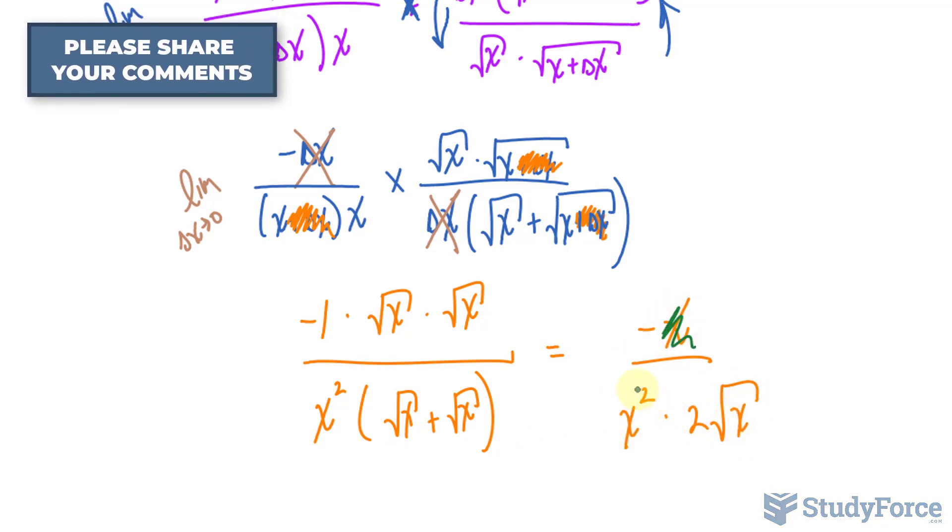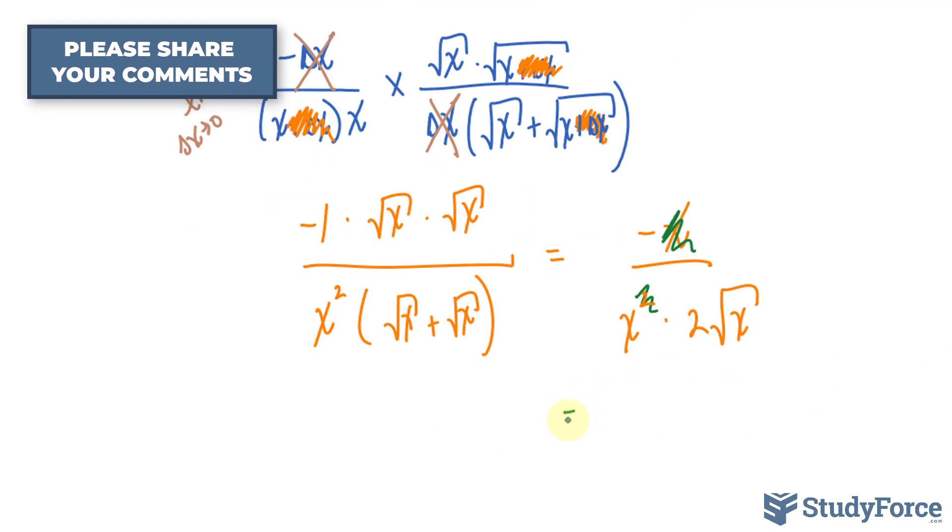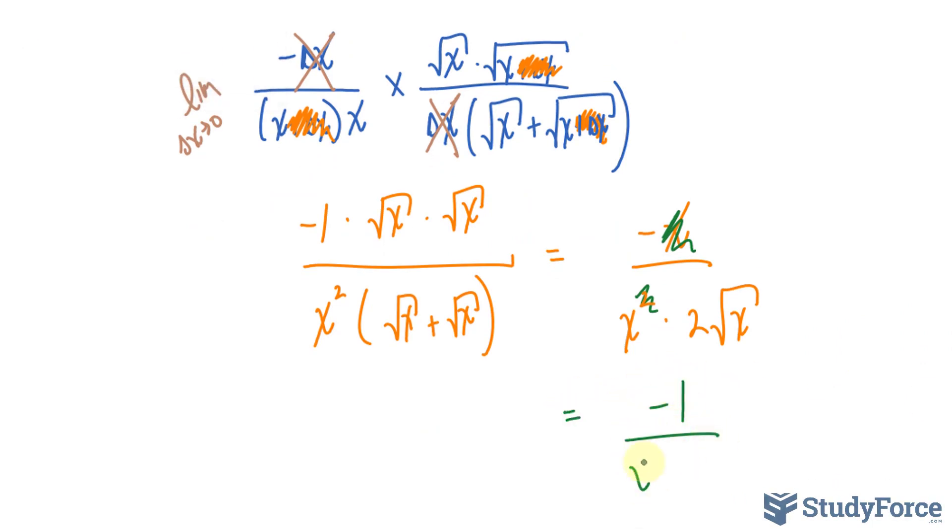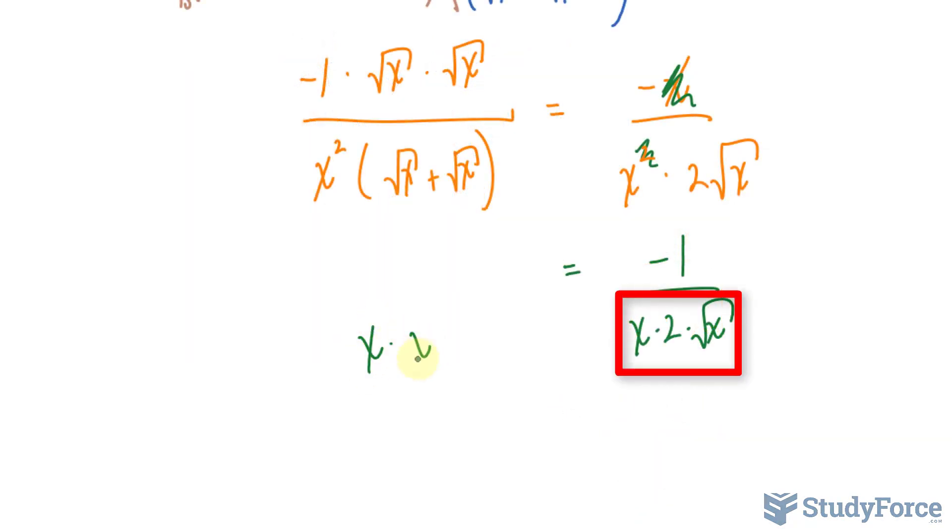These two combine as this. We can cancel this one with one of those x's. So we have negative one over x times two times the square root of x. x times the square root of x, which is x to the power of half, is x to the power of 3 over 2.